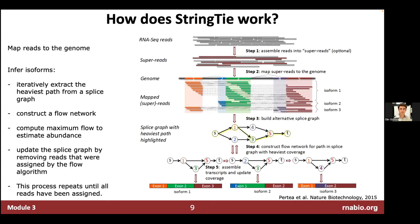We're going to use StringTie to calculate FPKMs and TPMs. StringTie is a very sophisticated piece of software designed to infer transcript-level expression estimates — isoform-level estimates — not just gene-level, but each individual isoform that might be expressed from a gene locus.